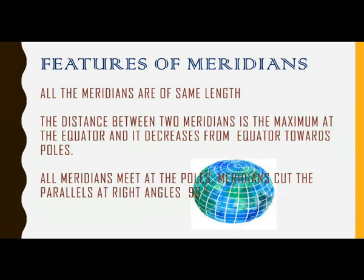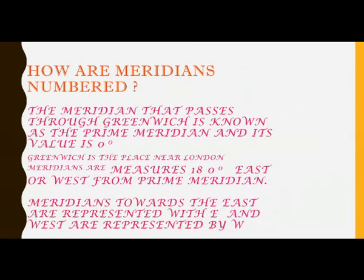Now let us learn some features of meridians. All meridians are of the same length — when you compare two meridians, they will have the same length. The distance between two meridians is maximum at the equator and decreases from the equator towards the pole. The size of the distance between meridians keeps reducing as they move toward the poles. All meridians meet at the pole.